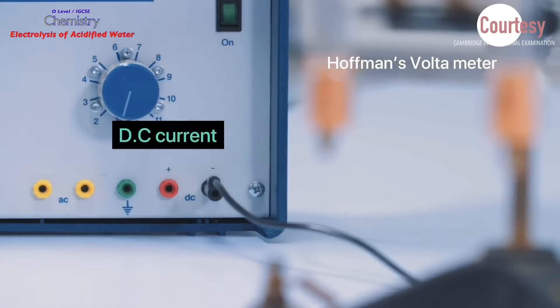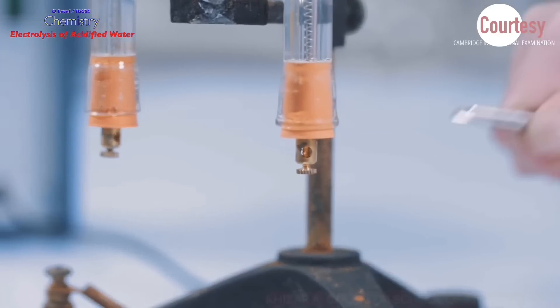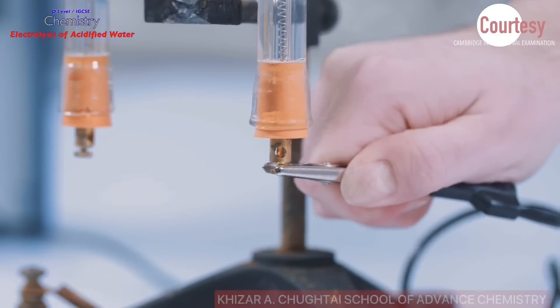Black cable is then connected to the negative terminal of the DC power supply and then one of the platinum electrodes. This becomes the cathode.